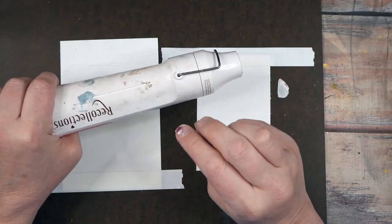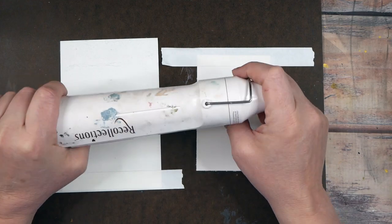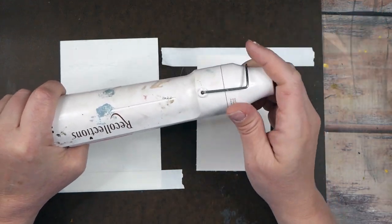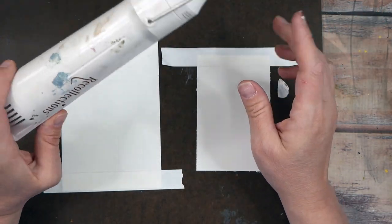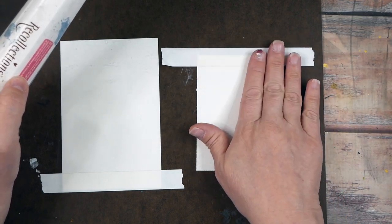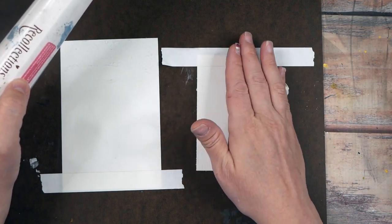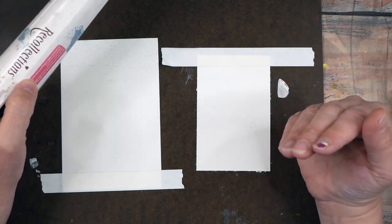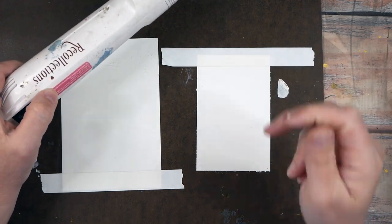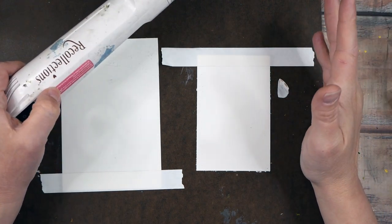A heat gun is different than a blow dryer. A blow dryer blows out lots of air. A heat gun blows out very little air but a whole lot of heat. I want you to use a heat gun, heat up that tape surface, and then peel the tape. Heat makes that adhesive release.